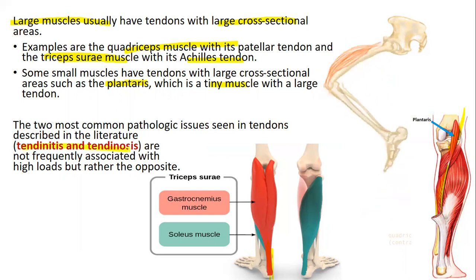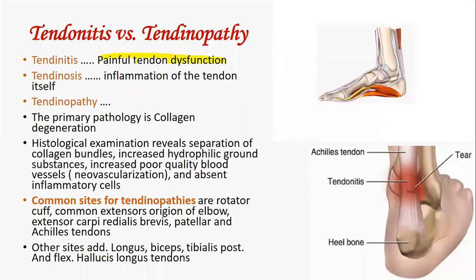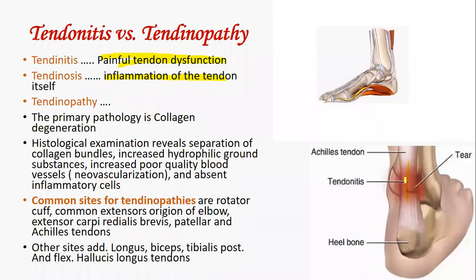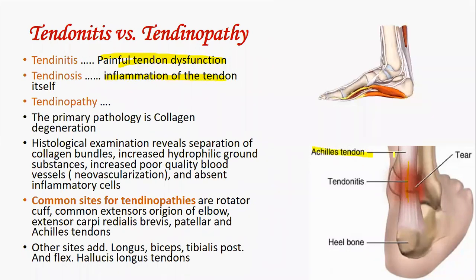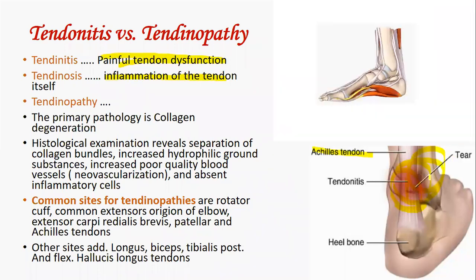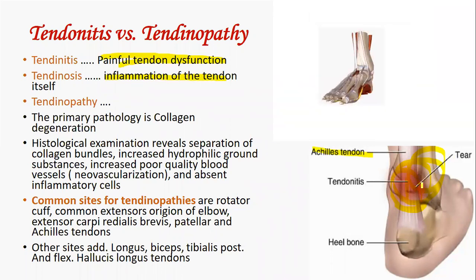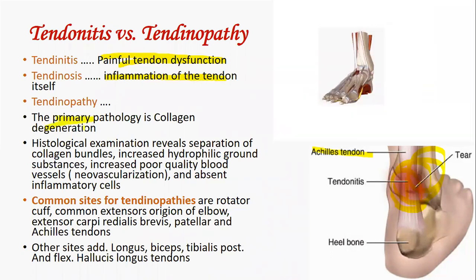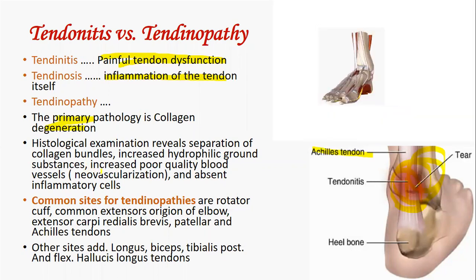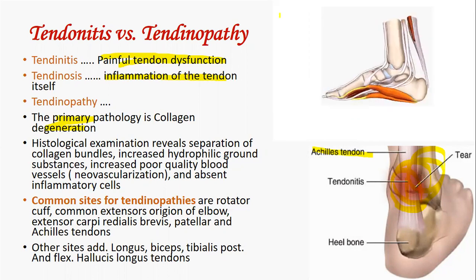The two most common pathological issues in tendons are tendinitis and tendinosis. Tendinitis is a painful tendon dysfunction, while tendinosis is inflammation of the tendon itself. When more load or stress is applied, it may lead to tearing of the tendon. Tendinopathy is the appropriate term as it encompasses all conditions related to tendon pathology. Common kinds of injury in tendinopathy are related to high rates of strain.